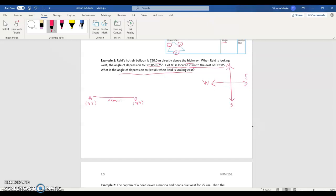This distance here is 2,000 meters. We know that the hot air balloon is 750 meters, and this is going to make a right angle with that highway. We're going to start looking down towards Highway 85, and we know the angle of depression when looking down towards Highway 85 is 75 degrees, the angle between the horizon and your line of sight looking down. Let's call this C, that's the hot air balloon. And we want to know, what is the angle of depression when you're looking down towards exit 83?